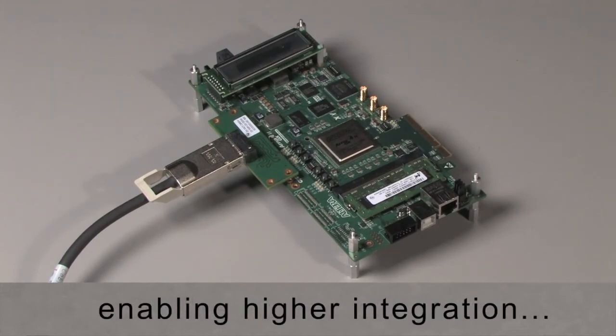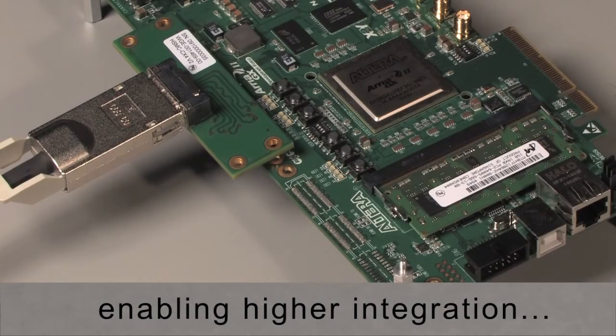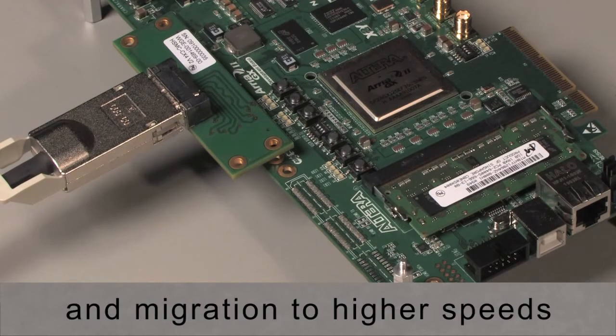CameraLink HS is designed around off-the-shelf components from multiple vendors. The technology used in the protocol is 8B10B and this is being invested in heavily by the FPGA vendors.